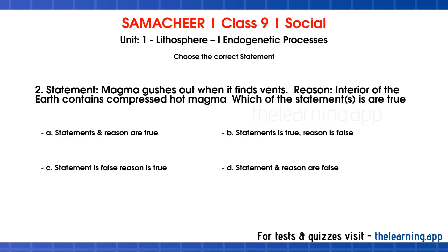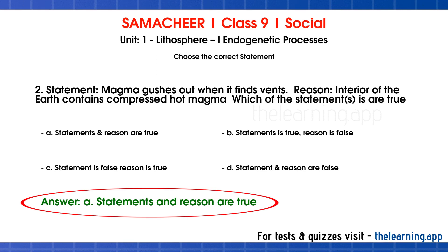Second question — statement: Magma gushes out when it finds vents. Reason: The interior of the earth contains compressed hot magma. Which of this is true? The correct answer is that both the statement and reason are true. Magma is found in the three layers: crust, mantle, and core.